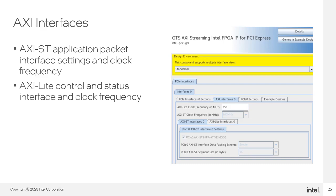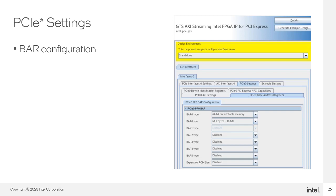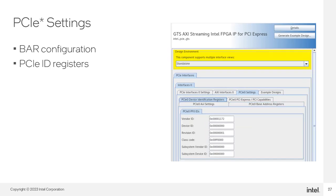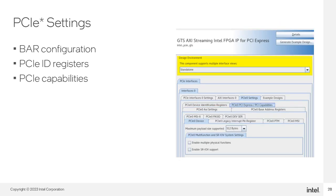The PCIe Settings tab lets you configure basic PCIe properties. These values will get programmed into the configuration space registers during FPGA configuration of the hard IP in the GTS transceiver. This screen capture shows the BAR setup. Another tab lets you program the ID registers. And finally, on another tab, you specify the capabilities that you want to broadcast during discovery.